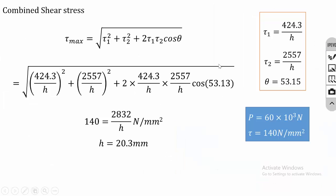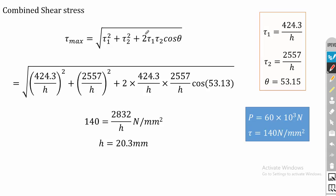With tau1 and tau2 calculated, we substitute into the combined shear stress equation: tau_max = √(tau1² + tau2² + 2·tau1·tau2·cos θ). Substituting all values and bringing H² outside, we get 2832 / H = 140 MPa (given allowable stress). Solving: H = 20.3mm.